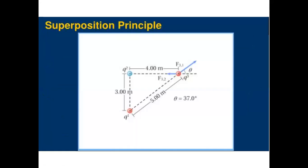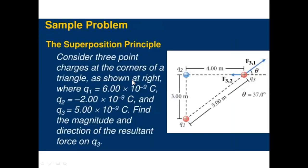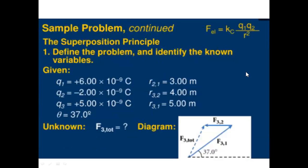For the superposition principle example, consider three point charges at the corners of a triangle. Q1 equals 6 times 10 raised to negative 9 coulombs, Q2 equals negative 2 times 10 raised to negative 9 coulombs, and Q3 equals 5 times 10 raised to negative 9 coulombs. Find the magnitude and direction of the resultant force on Q3.